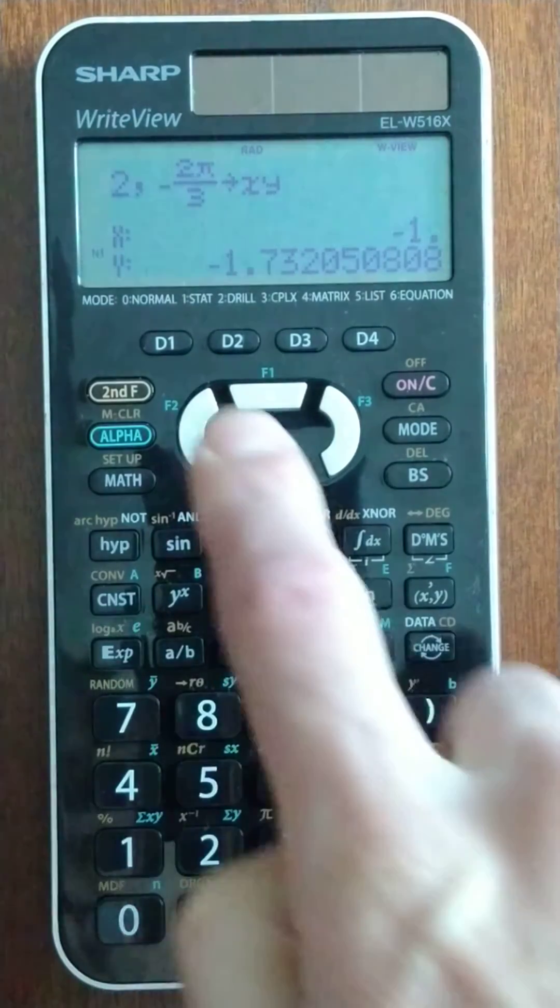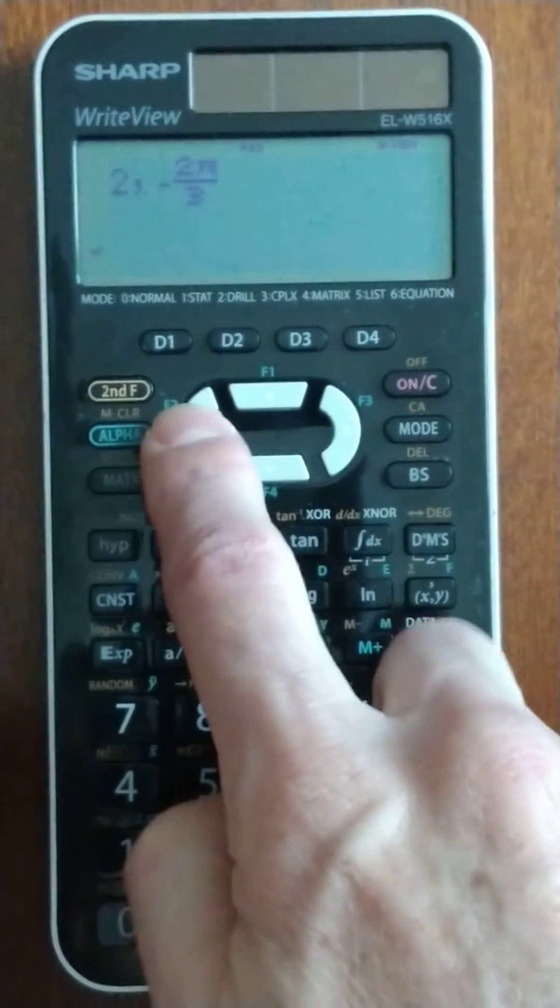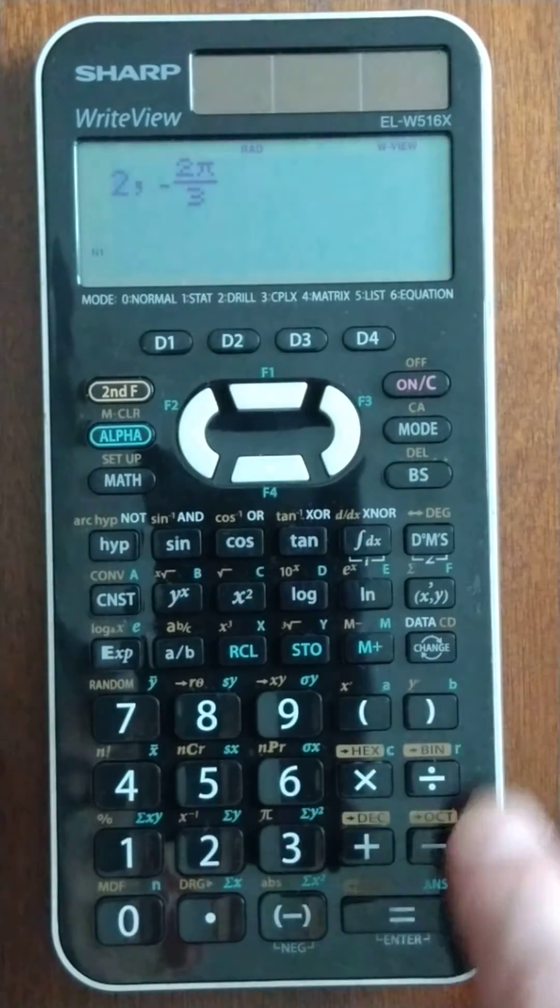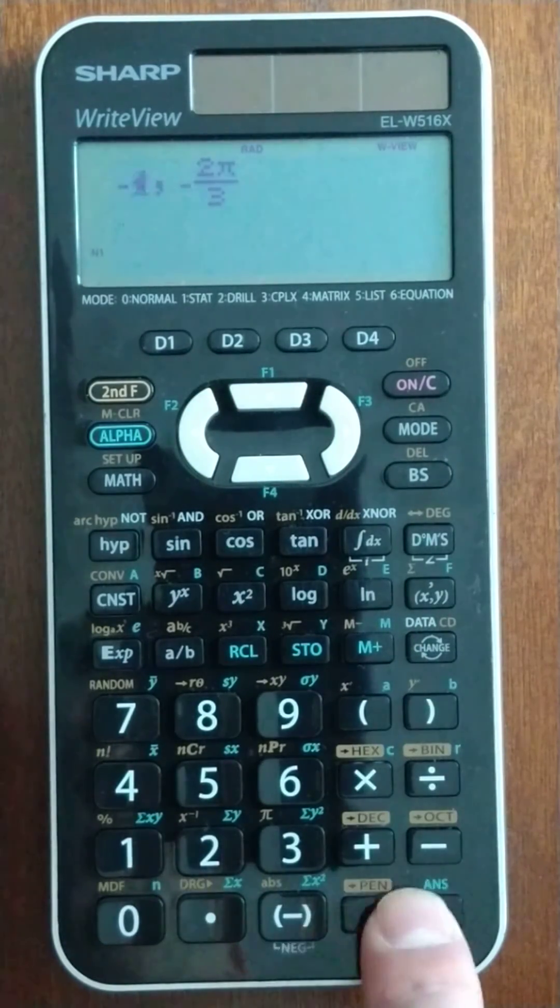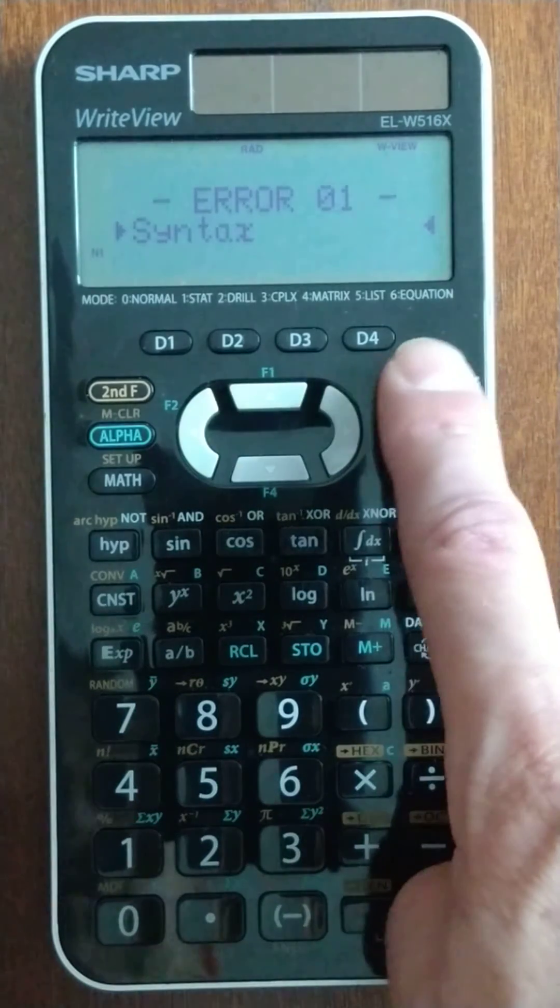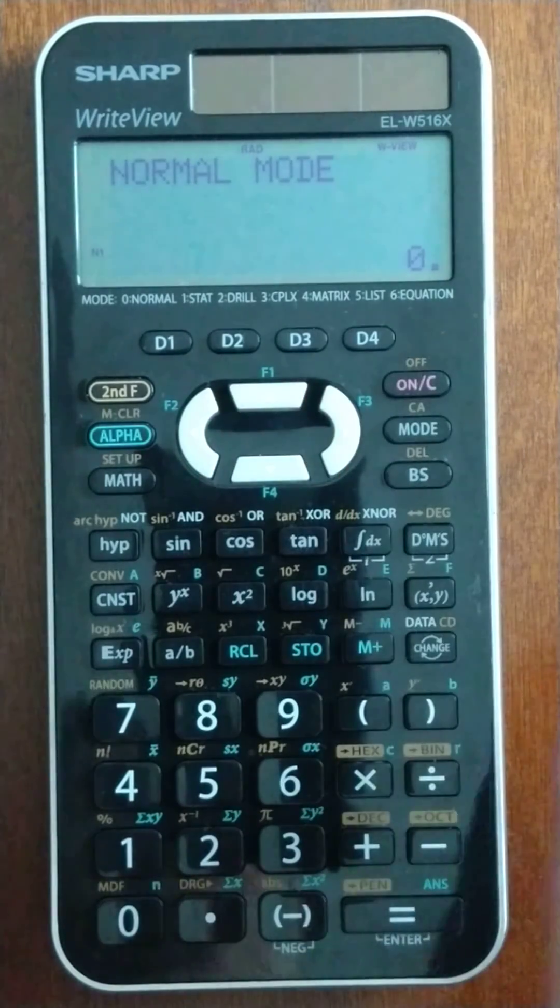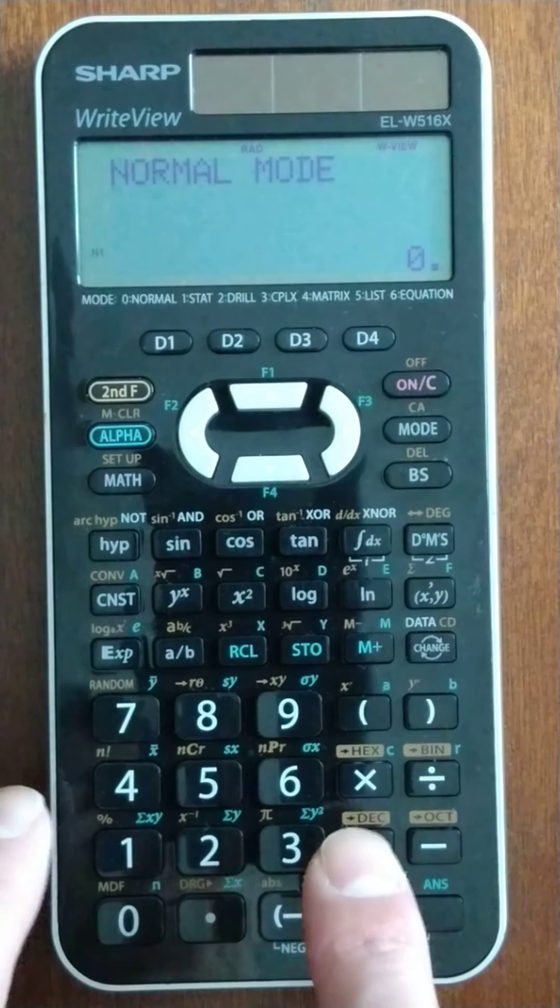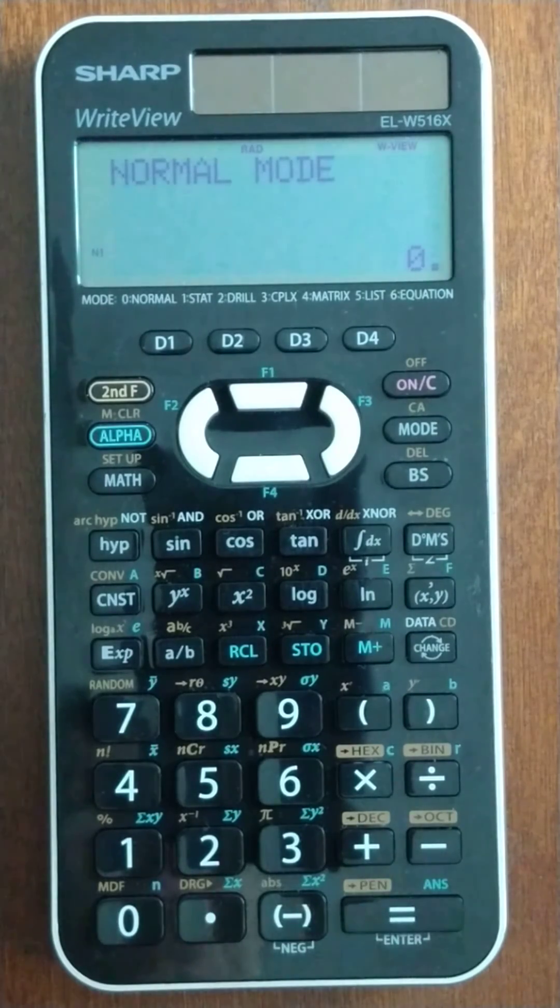Again, it won't work if you do a negative in front of this. So, let's see if it will let me put that in. Negative. I get an error. So, like the Casio. But it's pretty quick to actually convert. So, it's convenient, but not quite as powerful as a TI.